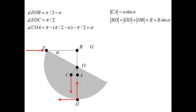The arm BD is equal to the sum of OD and OB. OD is equal to the radius, and OB could be found from the triangle EOB as R times sine alpha.